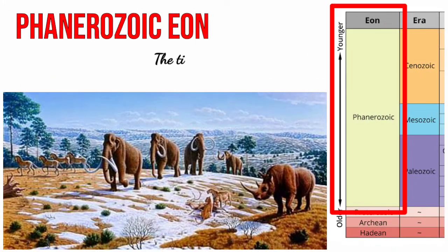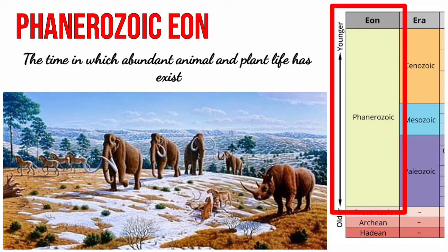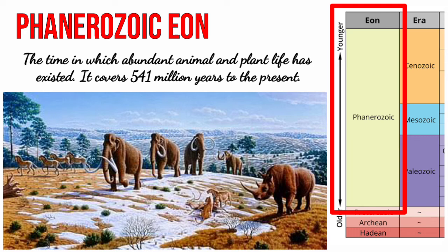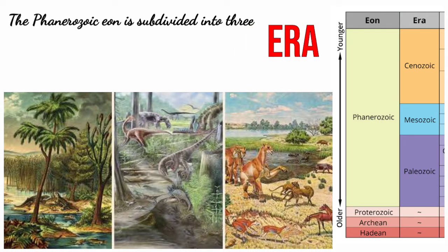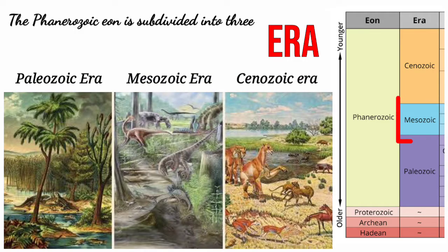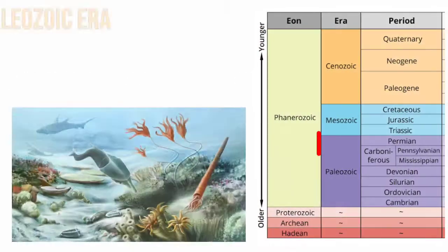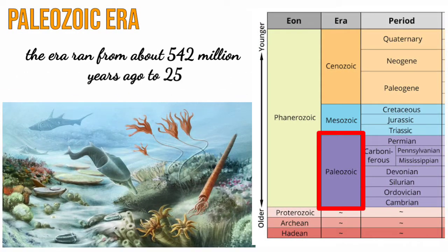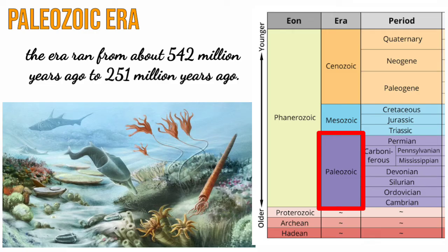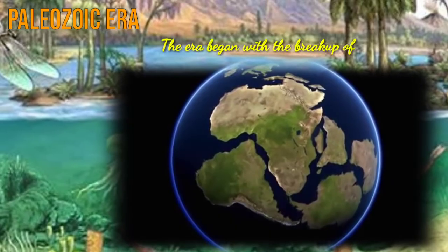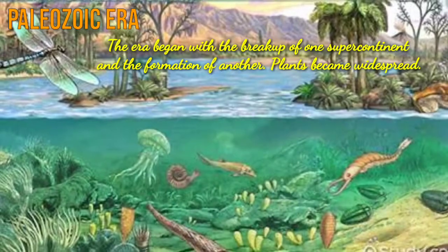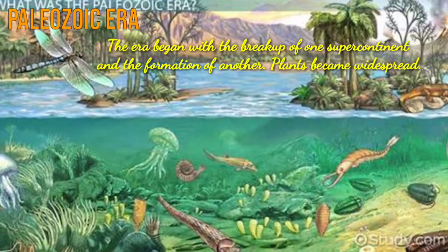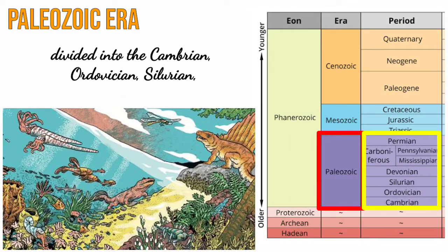The next eon is the Phanerozoic eon, the time in which abundant animal and plant life has existed. It covers 541 million years up to the present. The Phanerozoic eon is subdivided into three eras: the Paleozoic era, the Mesozoic era, and the Cenozoic era. The Paleozoic era ran from about 542 million years ago to 251 million years ago. It began with the breakup of one supercontinent and the formation of another, and because of this, plants became widespread. This era is divided into six periods of time.